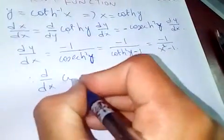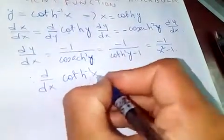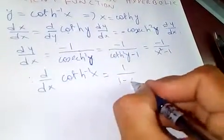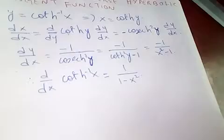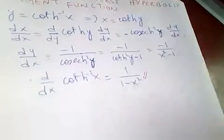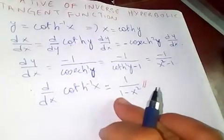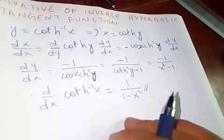Therefore, the derivative of coth hyperbolic inverse of x is one over, if you take minus one out, minus one minus x squared, which is the same as the derivative of tanh hyperbolic inverse of x, I think.